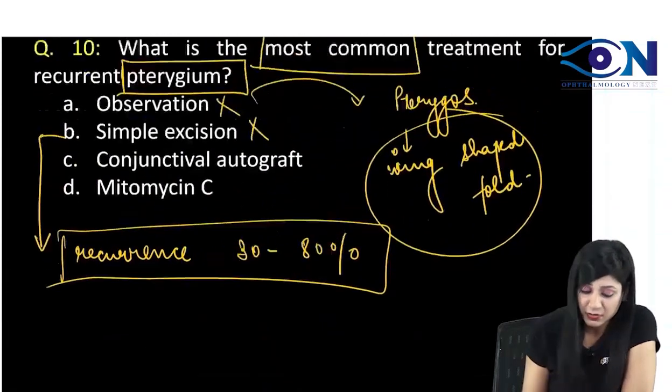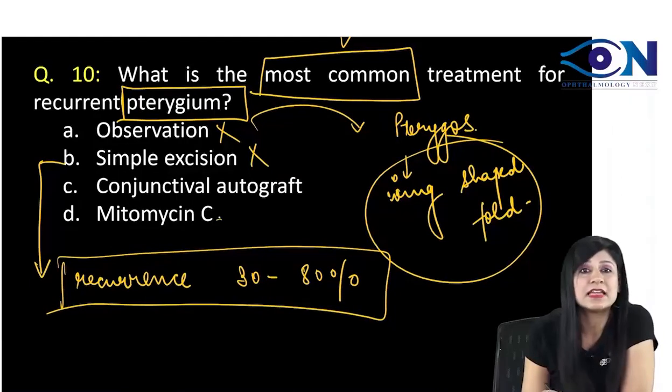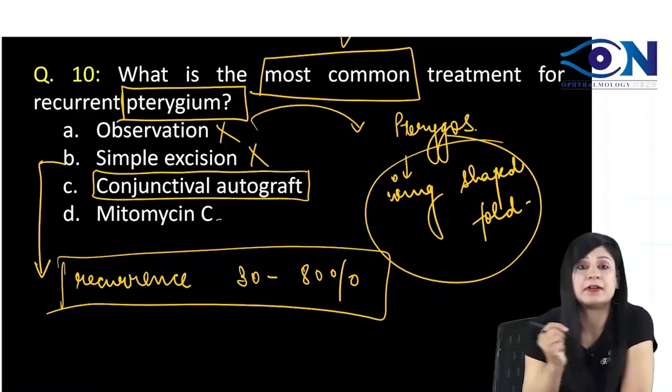If they have given you the most common treatment, out of mitomycin C and conjunctival autograft, it is the autograft that will be the better option.